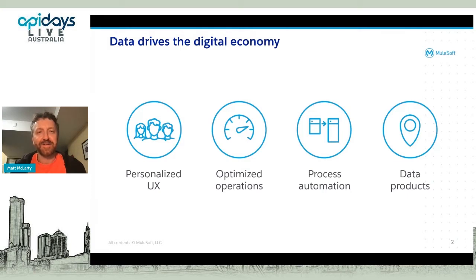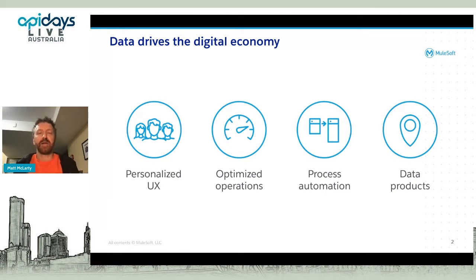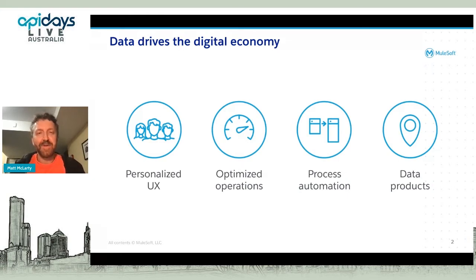Ten years ago, Mark Andreessen wrote his essay in the Wall Street Journal saying 'software is eating the world.' At that time, the explosion of mobile technology and second-generation web startups like Uber and Airbnb were saying software has to be a core capability for companies to thrive. But now, 10 years on, maybe it's data that actually drives the digital economy and software is just there to facilitate it.